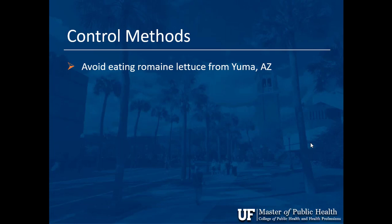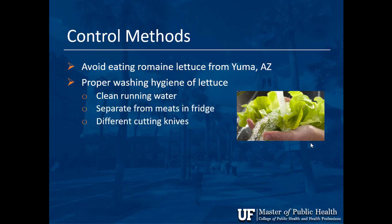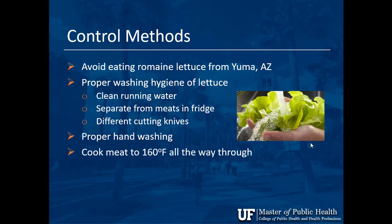In terms of prevention: they advised people to stop eating romaine lettuce, especially from Yuma, Arizona. If you are going to eat lettuce, wash it — rinse under cold running water, or use a three-to-one water and vinegar solution. Also separate meats from greens so meat doesn't drip onto vegetables, use different cutting knives, use proper hygiene with cutting boards, and wash your hands. For meat, cook to 160 degrees Fahrenheit all the way through.